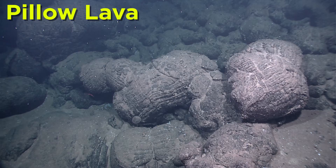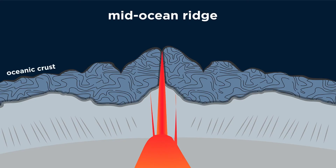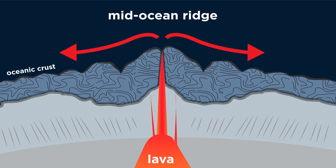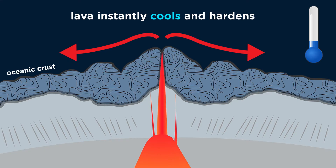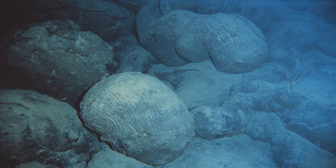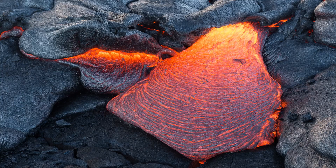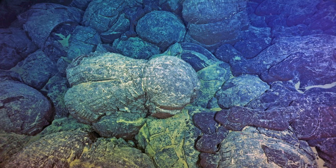Beneath the sediment is a layer of rock called pillow lava. At mid-ocean ridges where new oceanic crust is made, molten lava erupts from cracks in the crust, where it almost instantly cools once in contact with the cold ocean water. The rapidly quenched lava forms pillows, or bulbous bodies, which can then break open and exude more hot lava from beneath the surface to form additional pillows. This process repeats over and over, forming a thick layer of stacked pillow lavas.